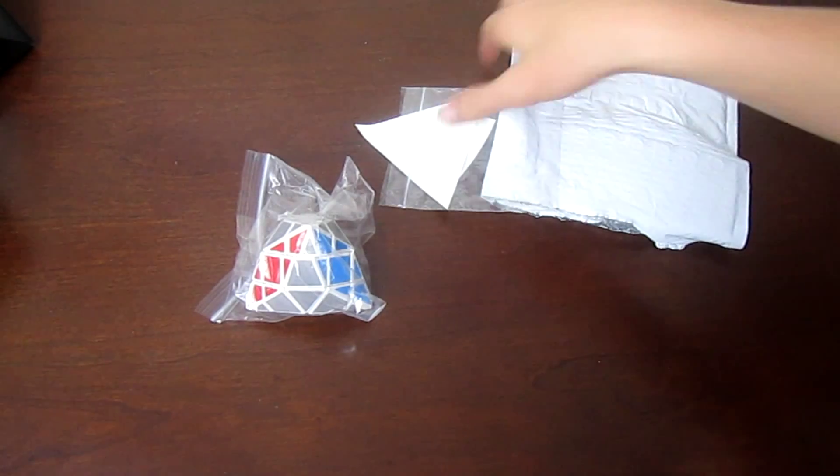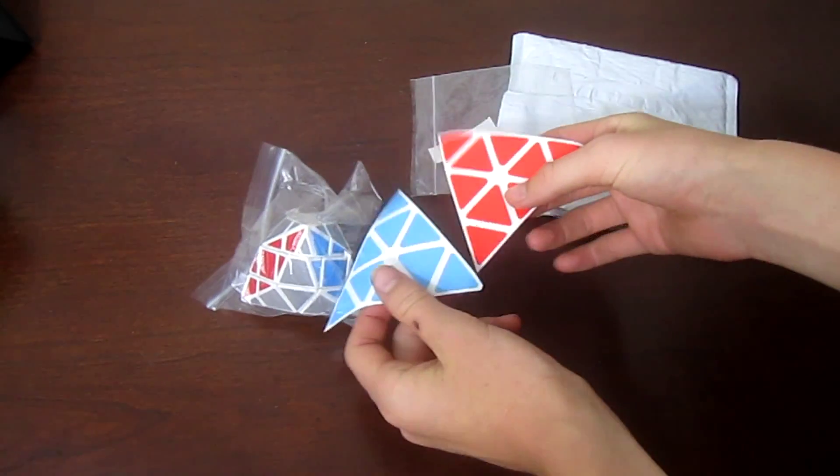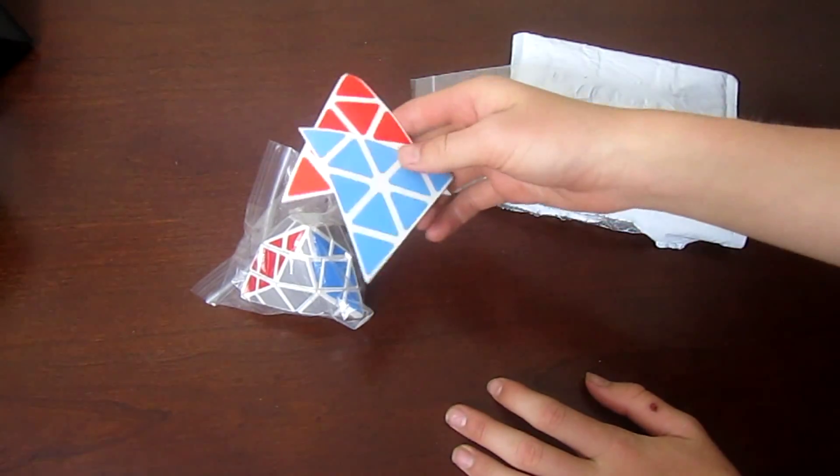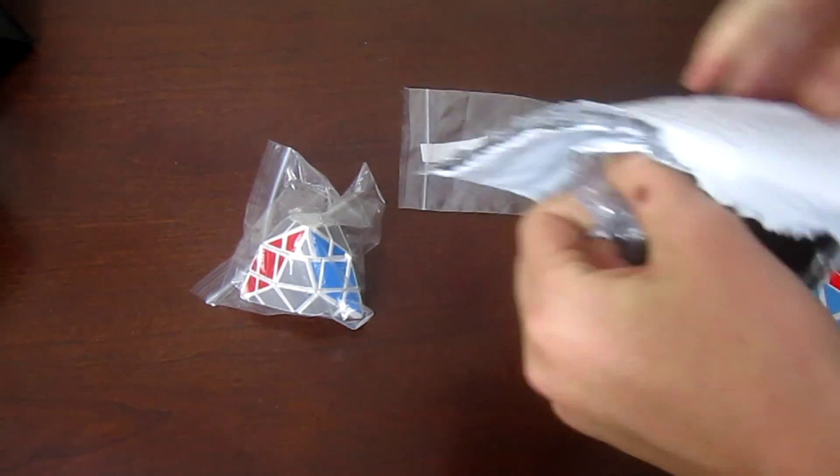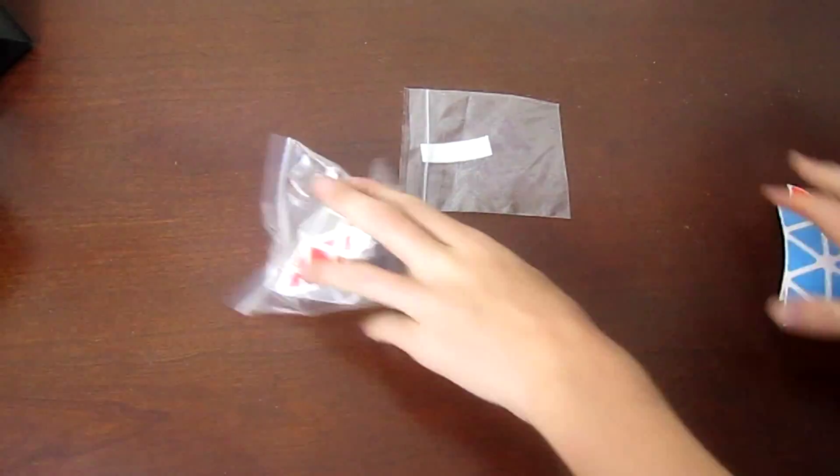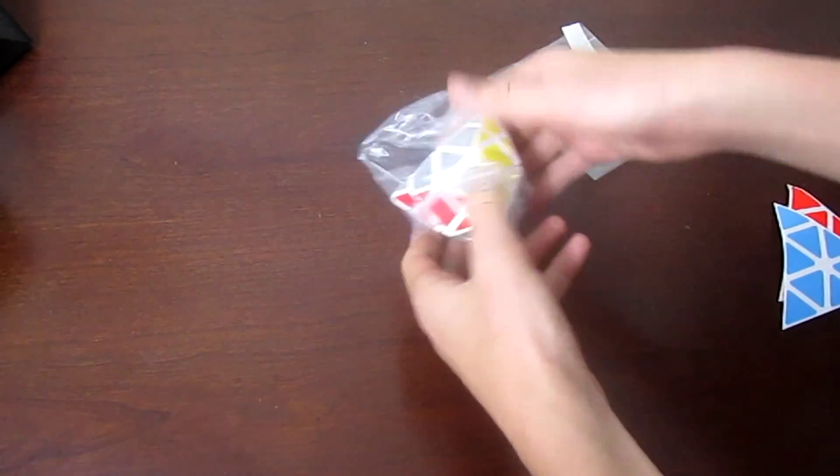So this is the Dianchine 3x3 Die Pyramid. I'm pretty sure I'm the first person on YouTube to have this. Probably will be the only one. It's a very weird cube. They also had a 4x4 version, so yeah, here it is. I got it in white, of course, and I wish it came in a box because that'd be kind of nice, but it's just in a little sandwich bag.